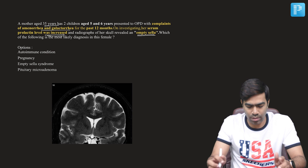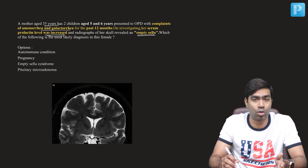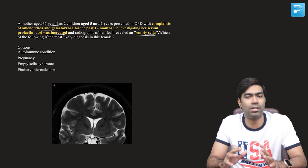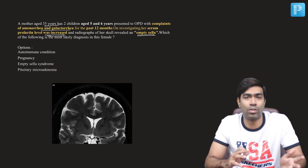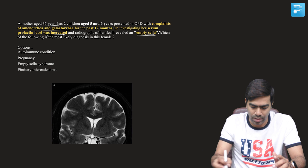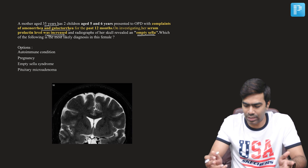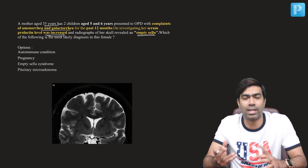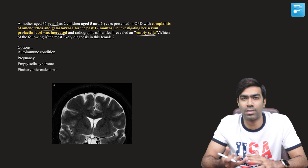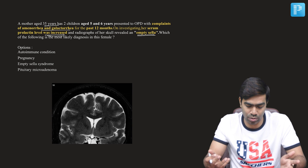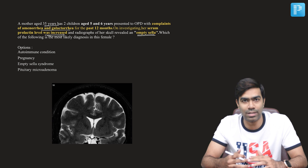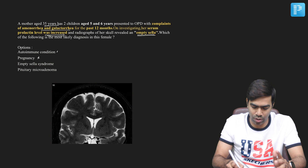We have four options here. Option A asks whether it's an autoimmune condition or not — I don't think you have any history compatible with an autoimmune diagnosis. Second is pregnancy — you can't diagnose pregnancy without any abdominal scans or a urine pregnancy test, and with 12 months of amenorrhea and galacturia, that option is also ruled out.